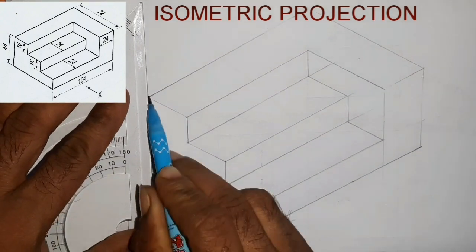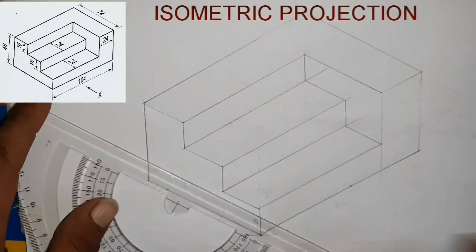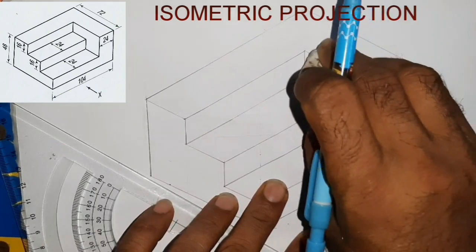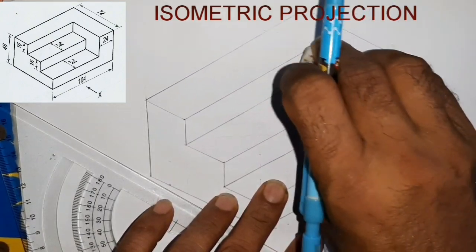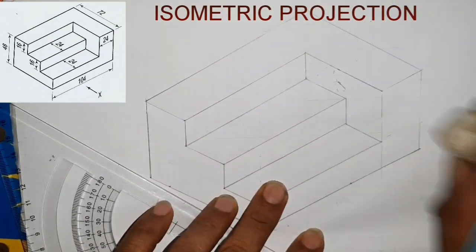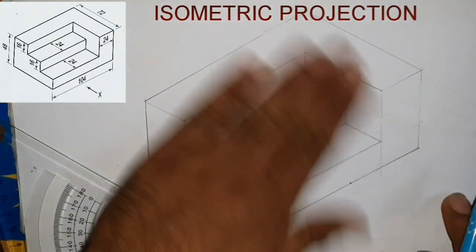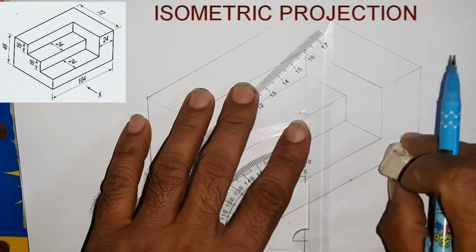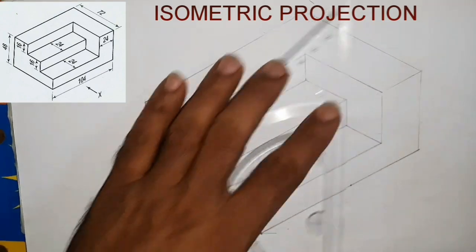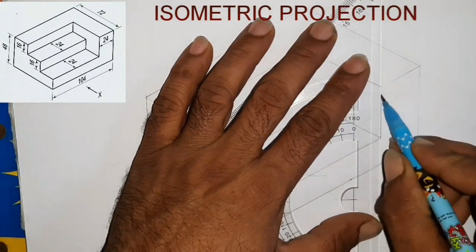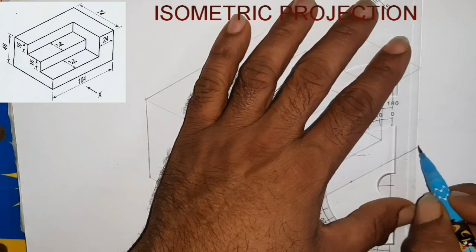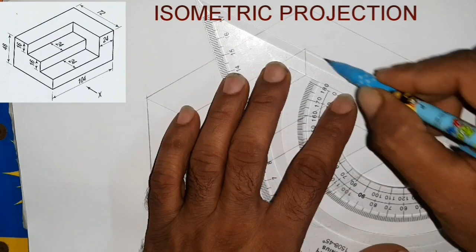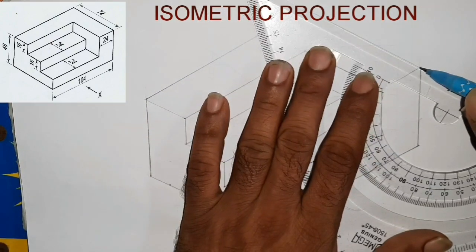We will draw the object to the diamond shape and complete the object drawing. We will draw the space around the object.